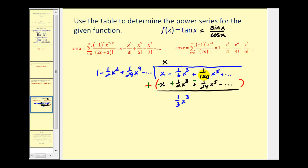And then we'll have one over one hundred twenty x to the fifth minus one over twenty four x to the fifth. And that's going to give us a negative one thirtieth x to the fifth.